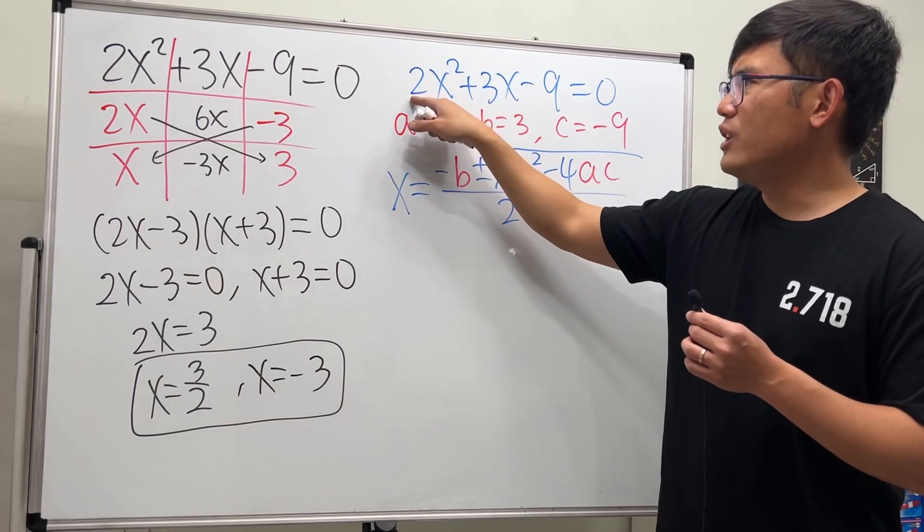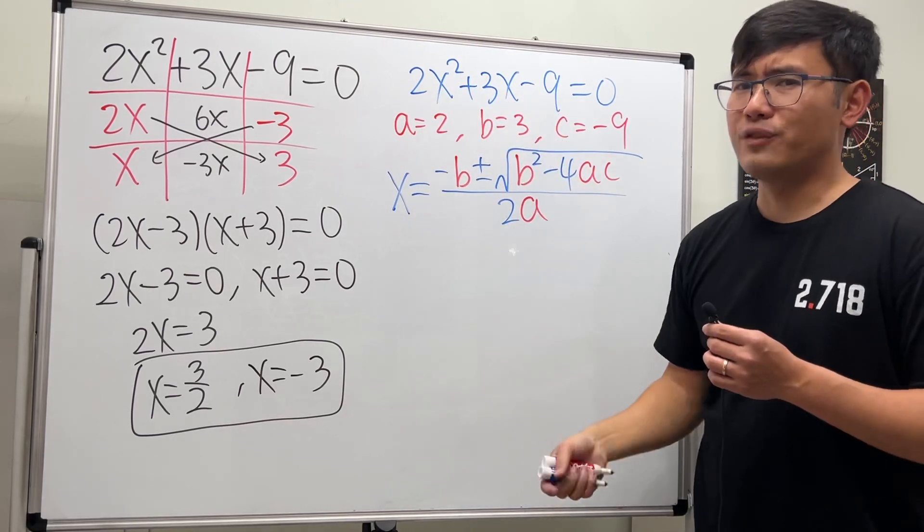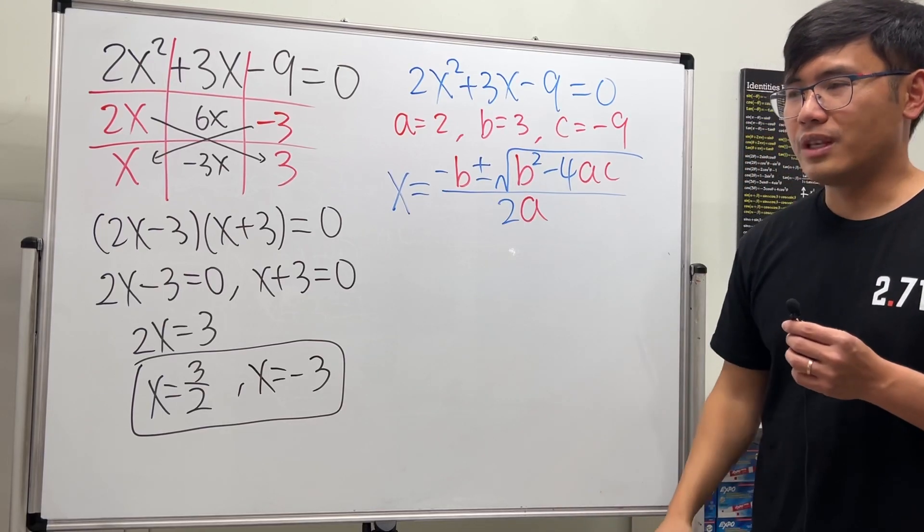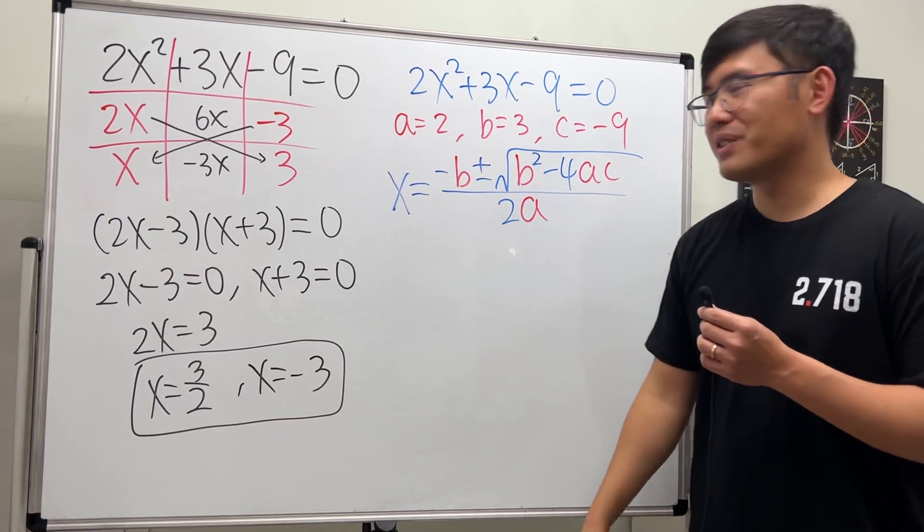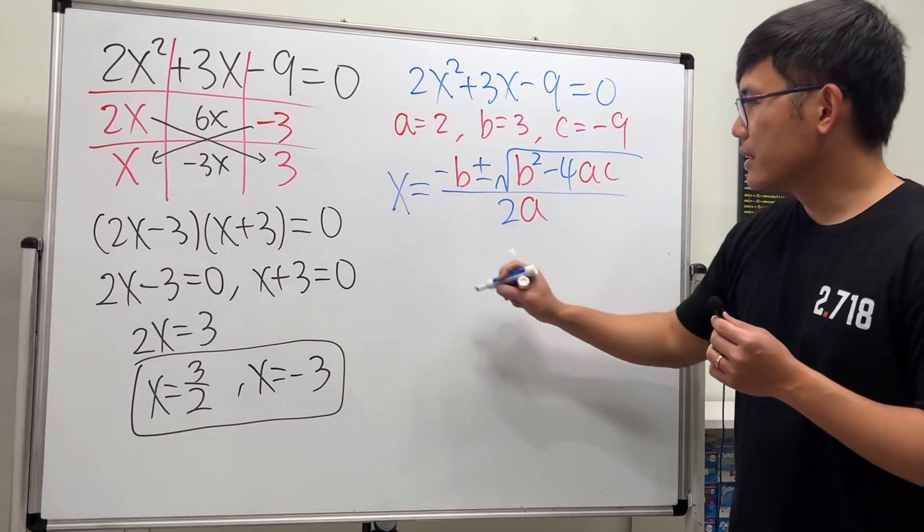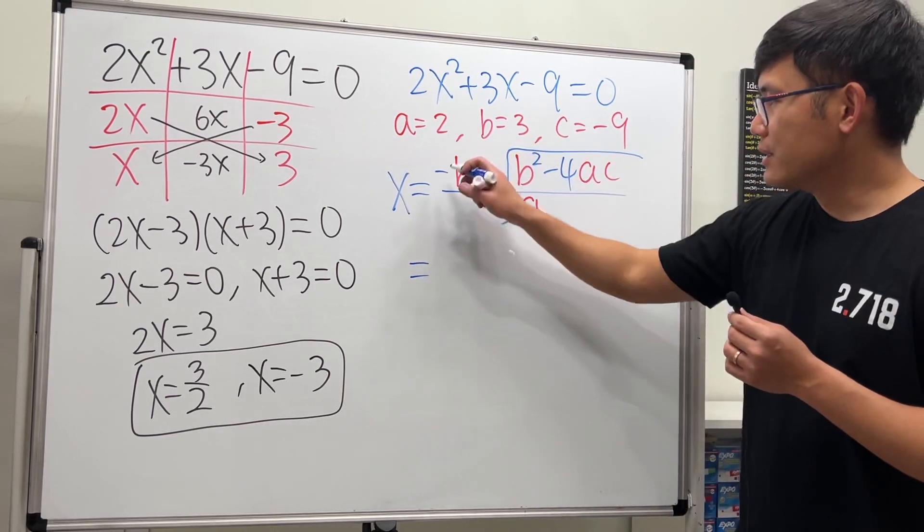If you divide everything by two, then we still end up with fractions, so completing the square will get you fractions. Just use the quadratic formula for this.